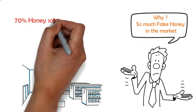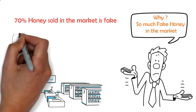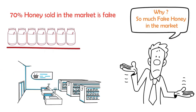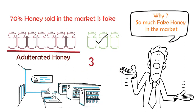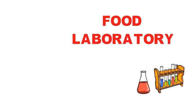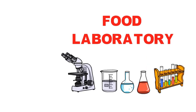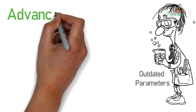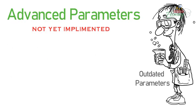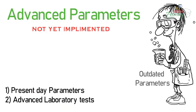Just consider this: according to a recent report, 70% of the honey sold in the market is adulterated — that is 7 out of 10 jars. To really check the purity of honey, you need to go to a laboratory and get advanced tests done. Only laboratory tests can tell you which honey is pure. But the irony is that our laboratory parameters are still outdated and advanced testing parameters are not yet implemented.